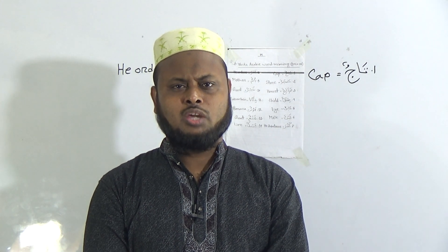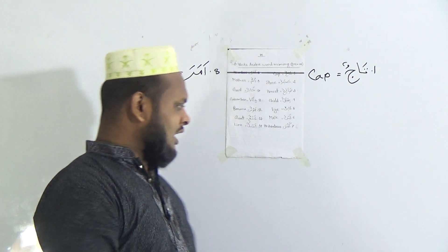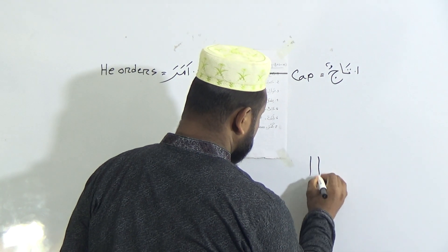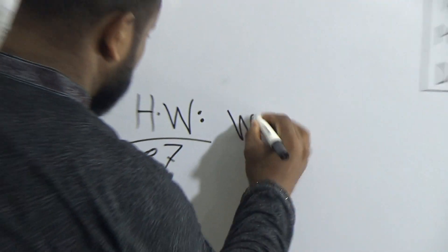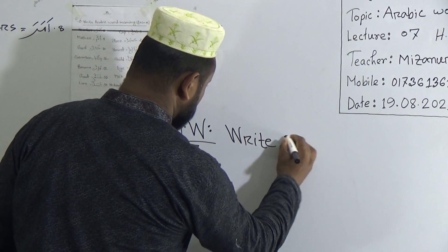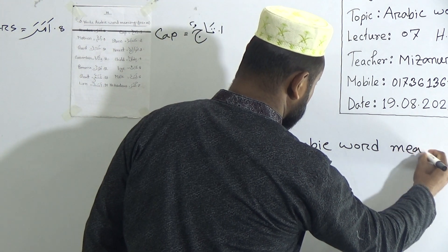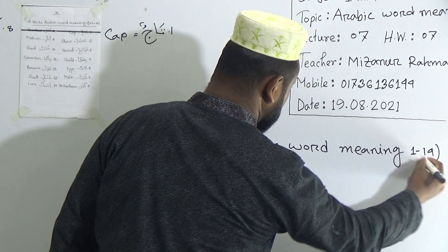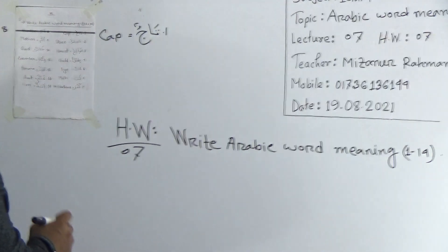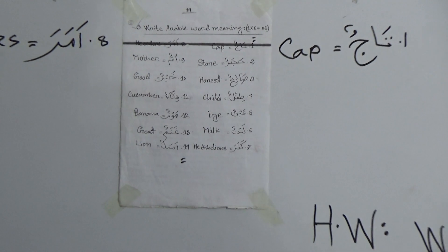You have to must write down every word meaning, and for every word meaning you will get one mark. So you will get total six marks for writing Arabic word meaning. So you have to be careful and take preparation on the word meanings. Now I want to give homework on the basis of today's lecture. Today's HW number is seven. Topic of HW: write Arabic word meaning, number 1 to 14. You have to write down Arabic word meaning from number 1 to number 14. Also memorize every word meaning because it is very very important for the exam.